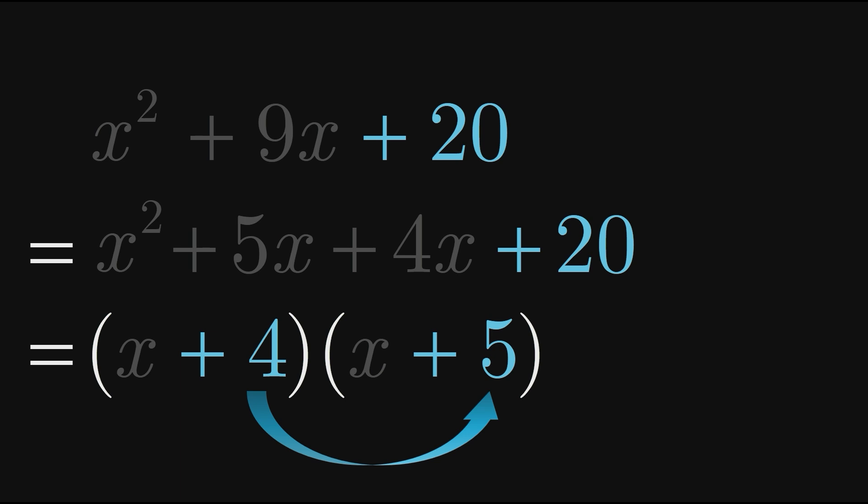But why do these values have to be 4 and 5? Couldn't they be 2 and 10, or 1 and 20? No, they couldn't. Because in addition to multiplying to the constant term of 20, when each of these two values is multiplied with the x term of the other factor, the combined result must be 9x.